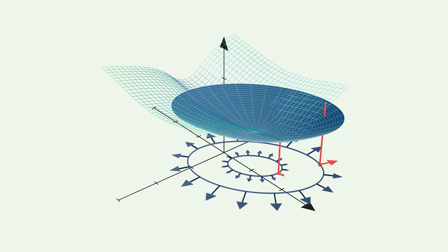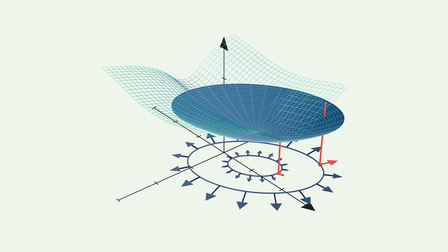In most implementations the next point is actually not chosen as the exact minimum of the quadratic approximation. The main reason is that we are not guaranteed that the quadratic approximation stays valid when we move away from the current point. Instead, we consider the minimum of the approximation as a hint that the true minimum is in this direction. Therefore we perform a so-called line search in this direction.